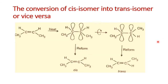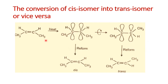Cis and trans isomers can be interconverted by applying heat. When heat is applied to the cis isomer, the pi bond breaks, leaving unhybridized p orbitals. Two possibilities arise: one group rotates to give the trans form when they overlap again, or they overlap without rotation to return to the cis form. This conversion of cis into trans or vice versa can be done in the presence of heat.